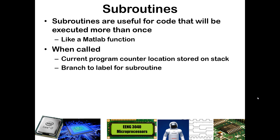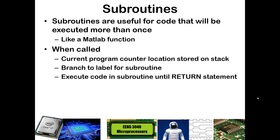Then the program counter is changed to the address for the subroutine that is called. Typically that will be given in the form of a label, and you will branch out to change the program counter to the address where that label is located in your code. Then you will start executing the code in that subroutine until you get to a return, or a return with literal in W statement. Once you hit that return statement, that address that was pushed onto the stack will now be popped off and returned into the program counter.